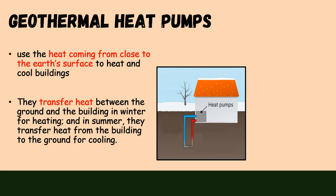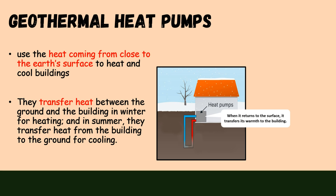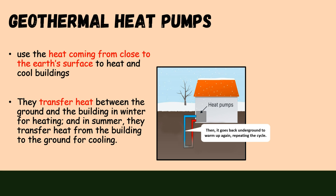This is how geothermal heat pumps work. Water or refrigerant moves through a loop of pipes. In winter, the water or refrigerant warms up as it travels through the loop buried underground. When it returns to the surface, it transfers its warmth to the building. After releasing its heat, the water or refrigerant cools down, then goes back underground to warm up again, repeating the cycle.